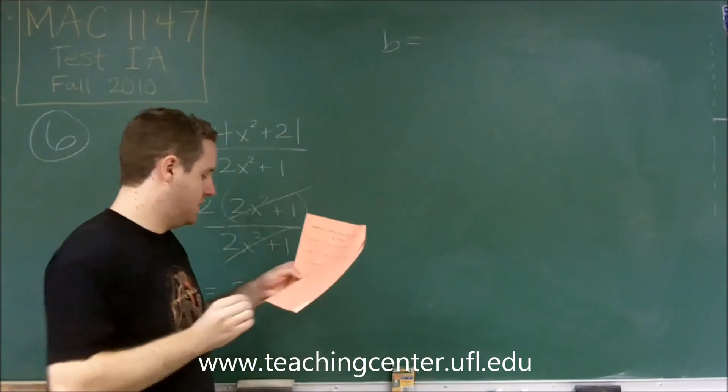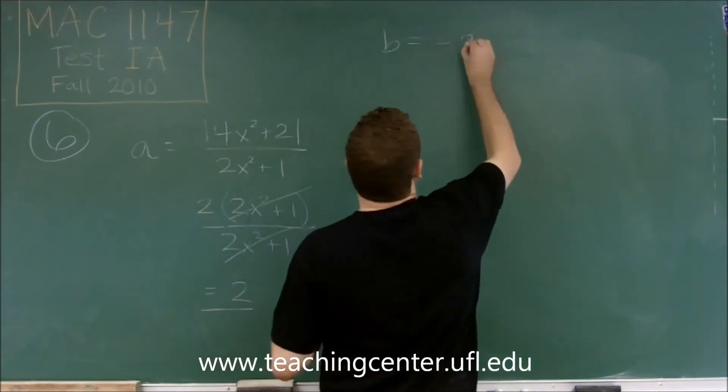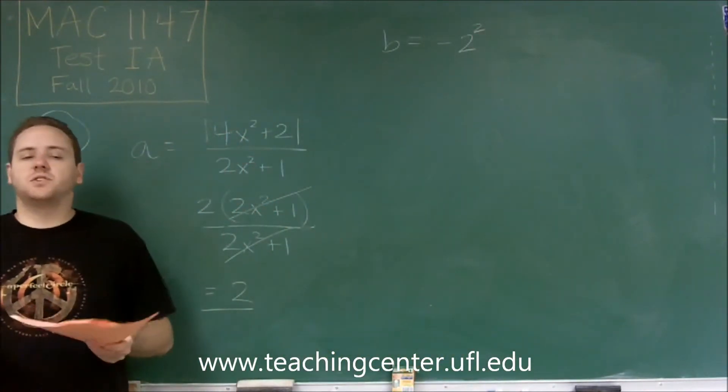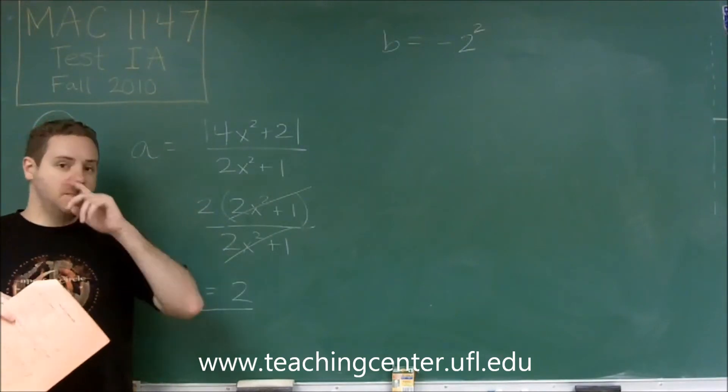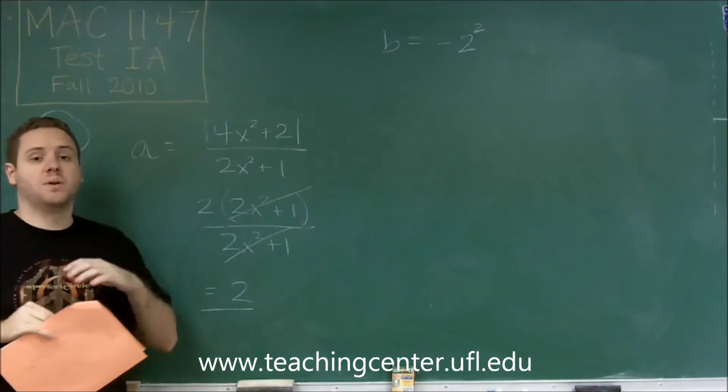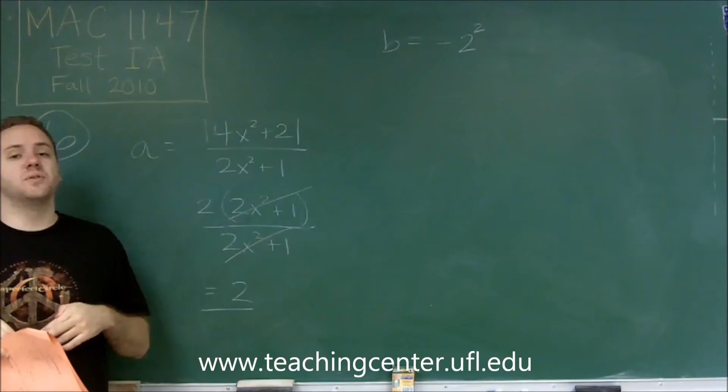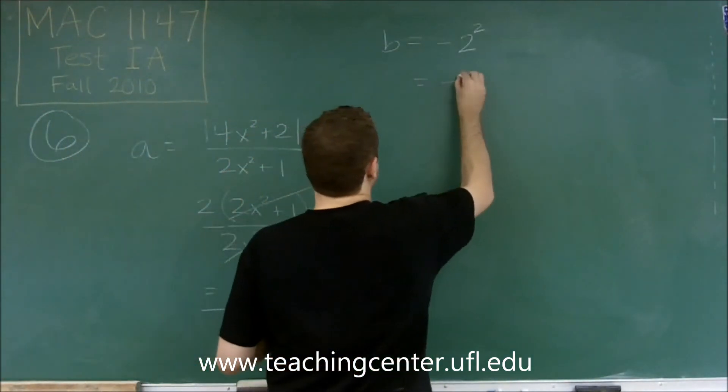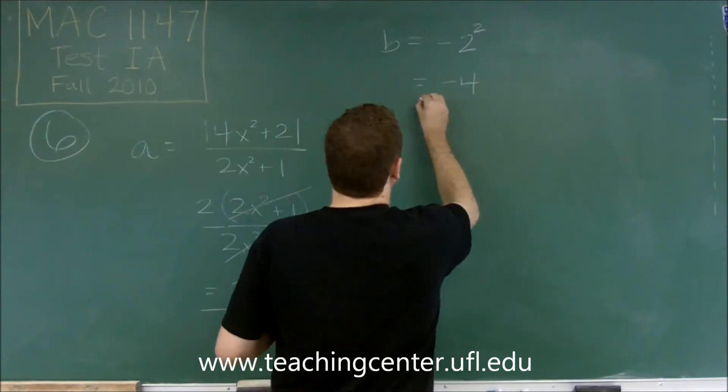Okay, so B is equal to negative 2 squared. This is just making sure you know how to do your order of operations. Because the negative 2 is not in parentheses, you need to do the squaring first and then times by the negative. So 2 squared is 4. We do a negative afterwards and we get negative 4. So that's B.